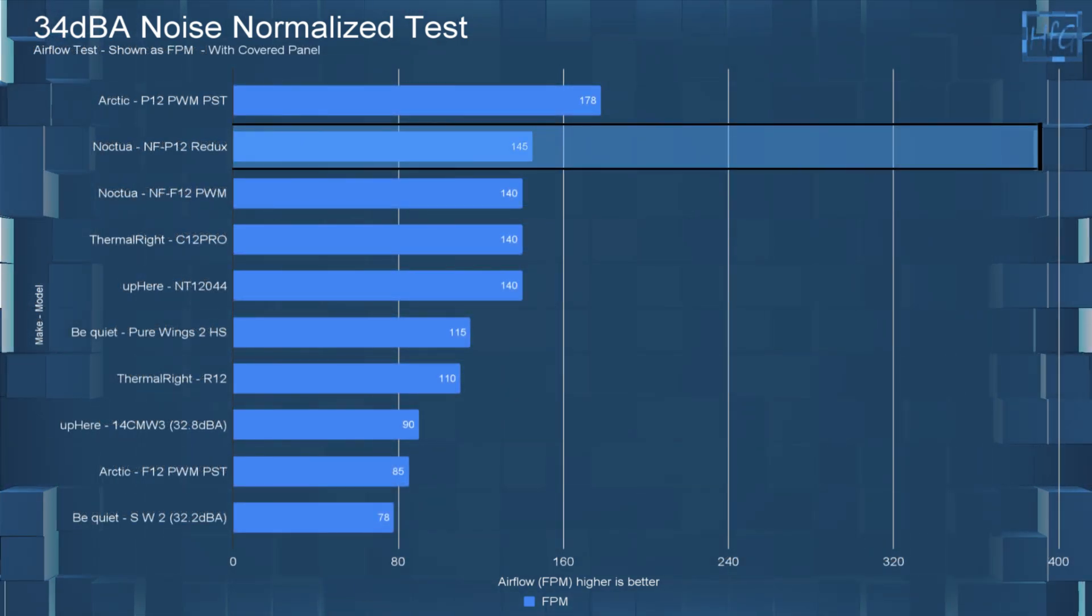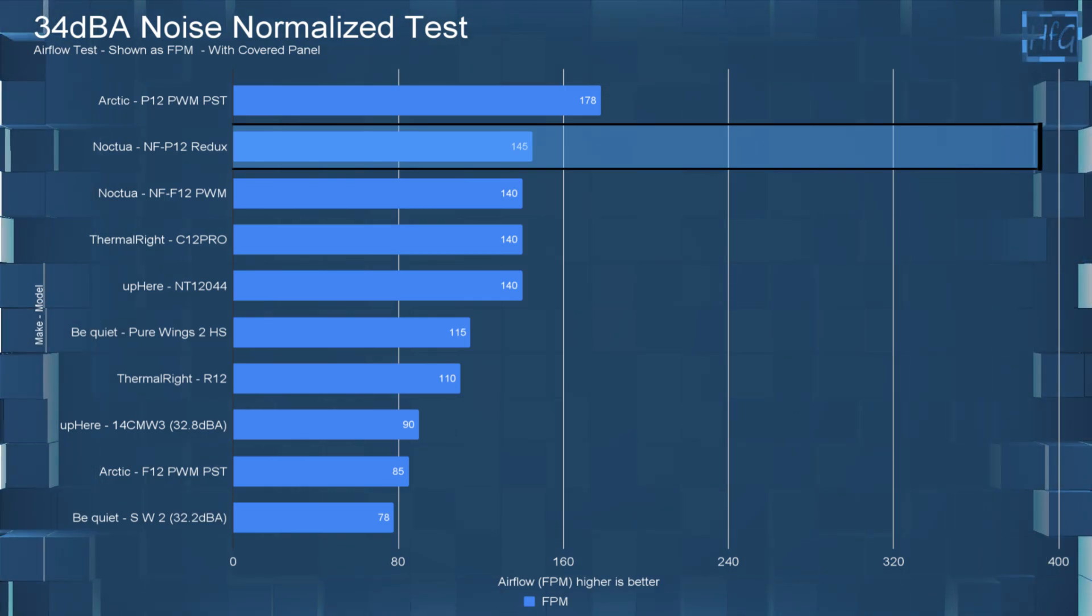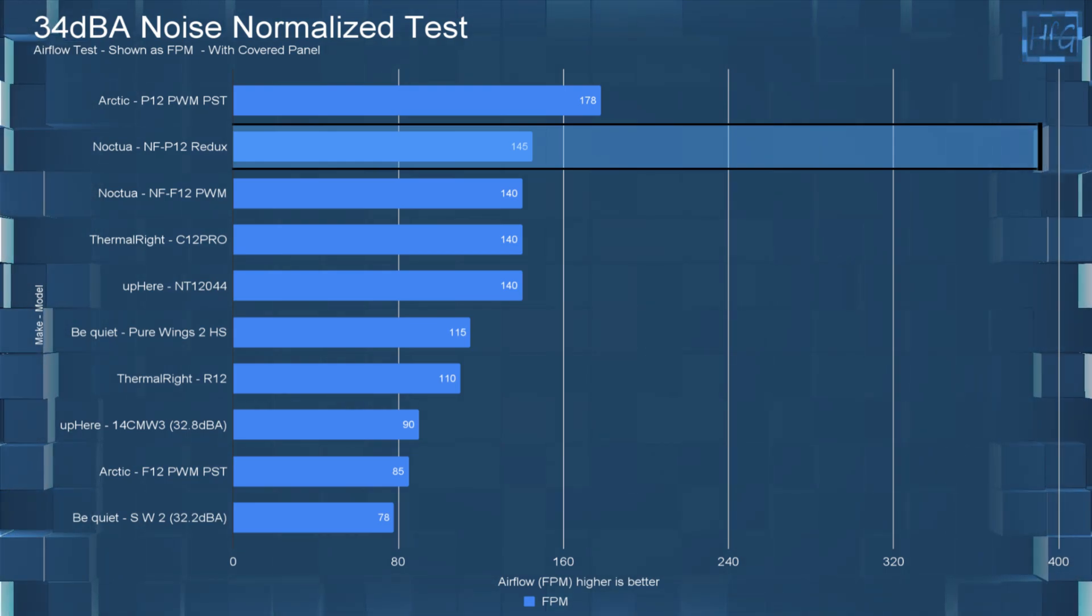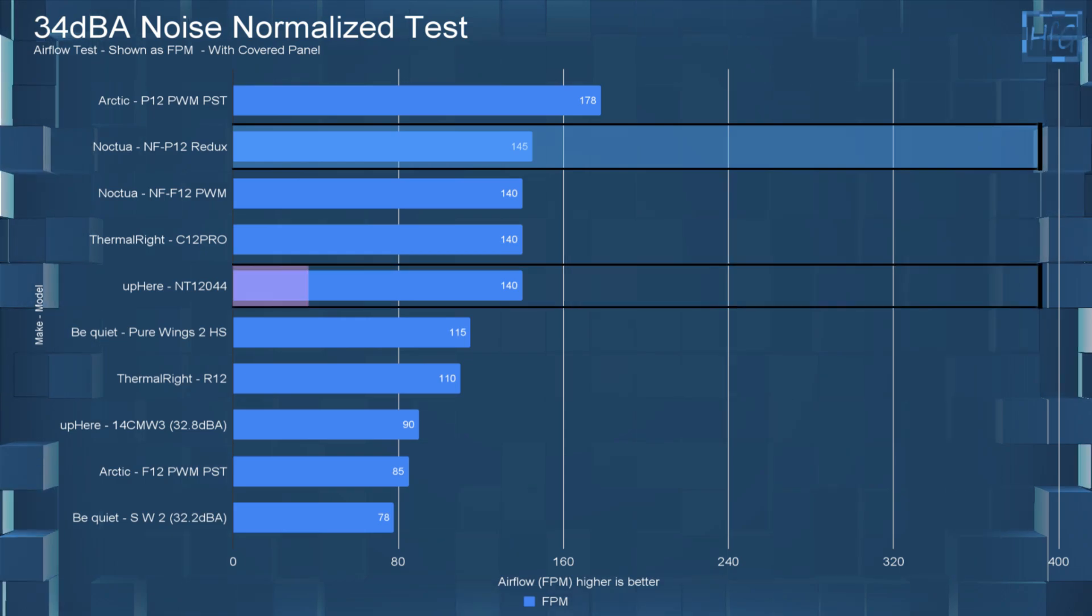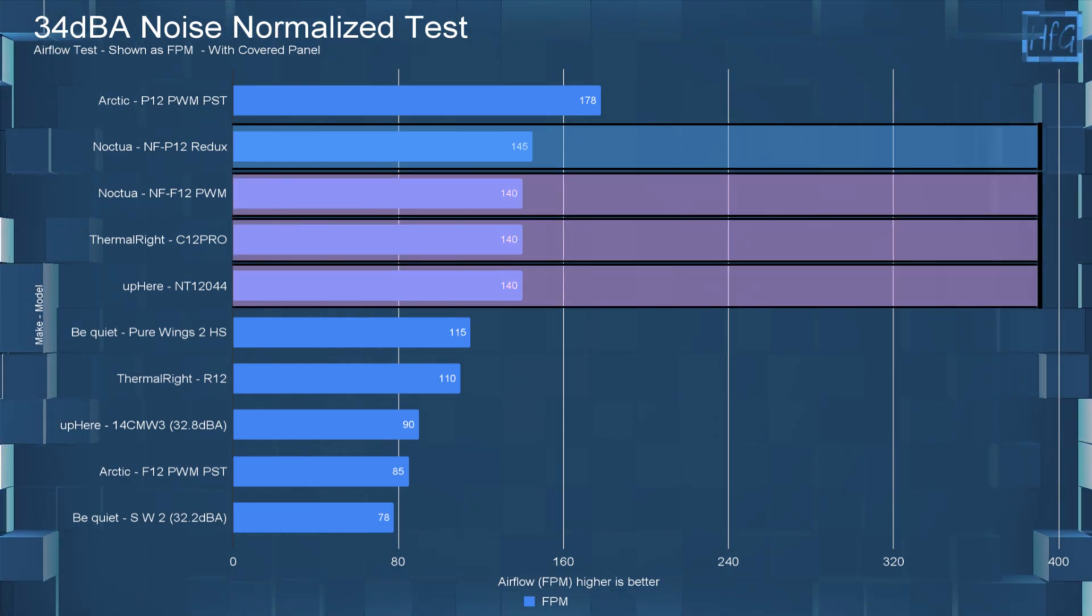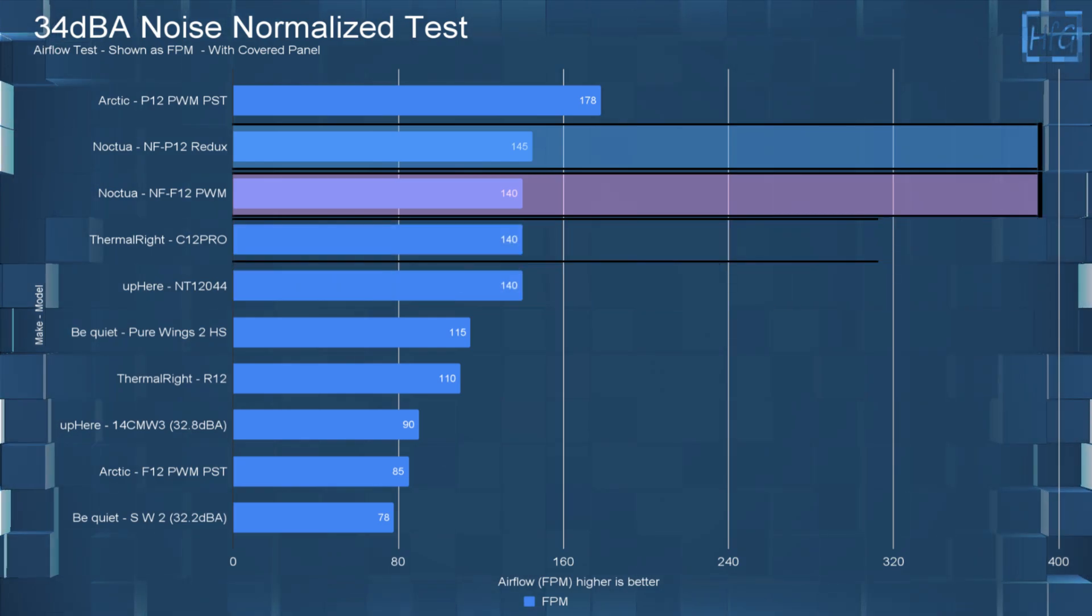And finally, with the covered panel and noise equalized to 34 DBA, the NF-P12 is now second from the top with an FPM of 145, which is pretty much matching the Thermalright TL-NT-12044, the C12 Pro, and the NF-F12.